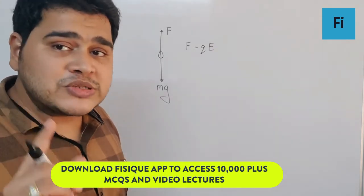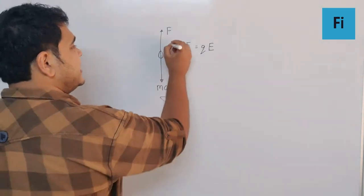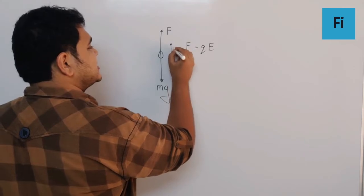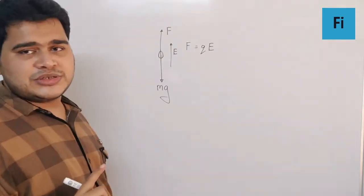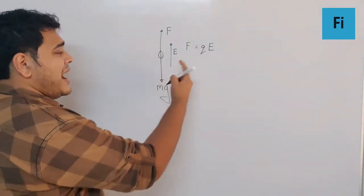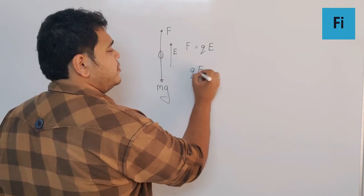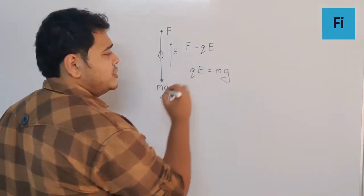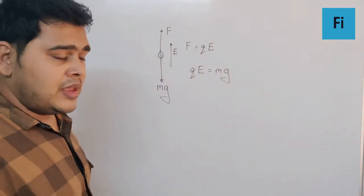Here the charge given is 10 raised to minus 6 Coulomb, positive, which means the electric field is in the same direction as the force. So now to find the magnitude, we can equate both the forces: QE is equal to mg.